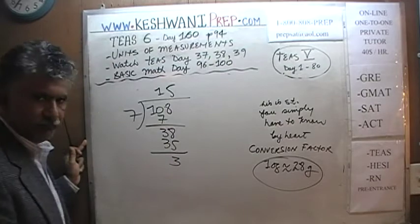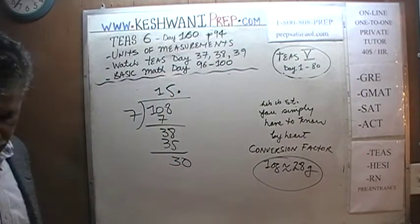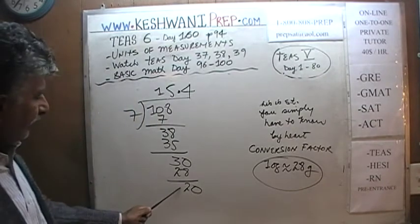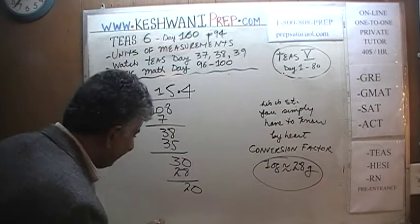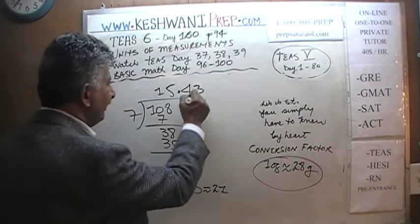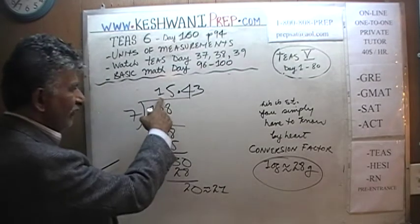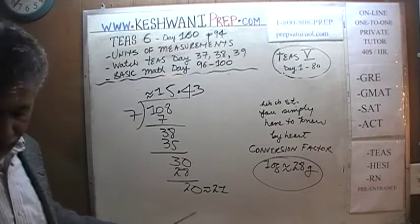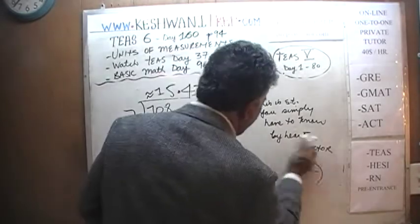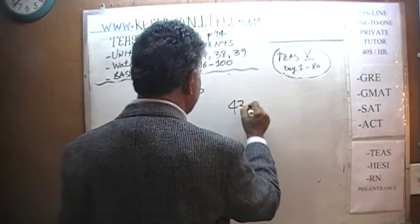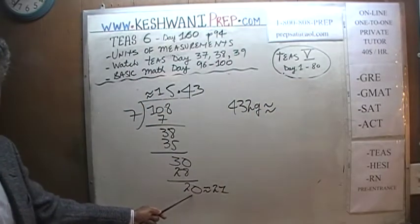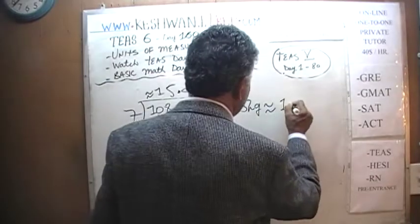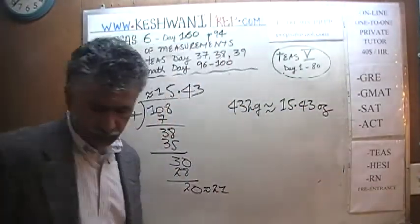Doing the long division: 10 has one 7 with remainder 3; 38 comes down — seven fives are 35, remainder 3. Stick a decimal, becomes 30; 30 has four 7s giving 28, remainder 2. Then 20 is approximately 21, which has three 7s. So the result is approximately 15.43. The conclusion is that 432 grams is approximately 15.43 ounces.